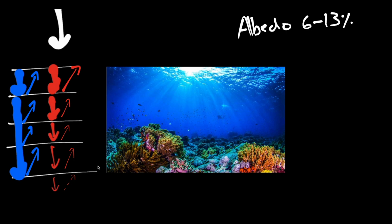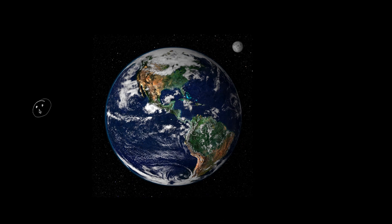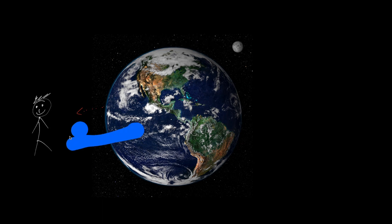From outer space, what we're really seeing is a summation of all these reflections. The blue light reflections add up across all layers, while the red light contributions diminish rapidly. So when you're an astronaut in space looking back at Earth, a very small amount of red light reaches your eye, but a huge amount of blue light makes its way to you because of that phenomenon. That's why the ocean appears blue whether you're deep in the ocean or viewing Earth from space. Hope you enjoyed that explanation — be sure to subscribe for more great content.